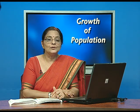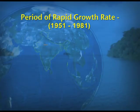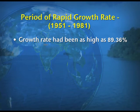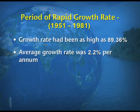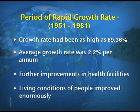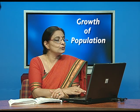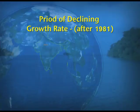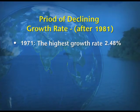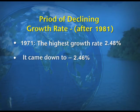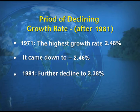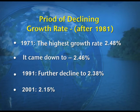The third stage is the period of rapid growth from 1951 to 1981. In this period the growth rate was very high at 89.36%, with an average growth rate of 2.2% per annum, due to better health facilities, better living conditions, decline in death rate, and high natural increase. The fourth stage is the period of declining growth rate after 1981, when the growth rate fell from 2.48% in 1971 to 2.46% in 1981, then to 2.38% in 1991, and 2.15% in 2001.